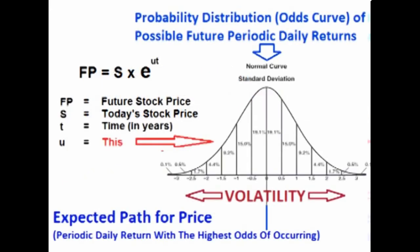We can take that expected path of price along with the volatility and form what is known as a probability distribution of what the future path of price will be. In other words, we take the expected path of price and the volatility and form a range around the expected path that tells us the probability or odds of any path occurring.